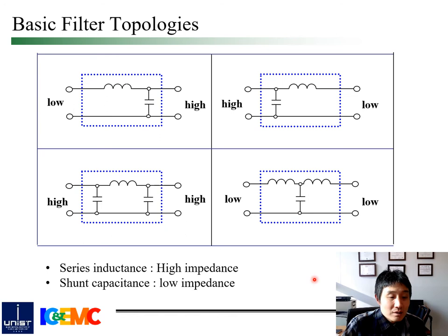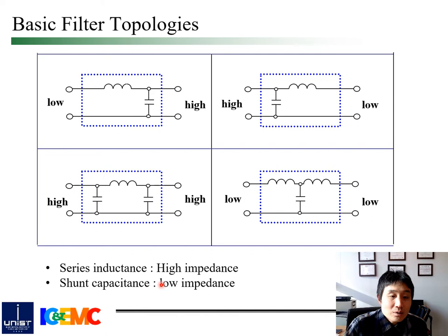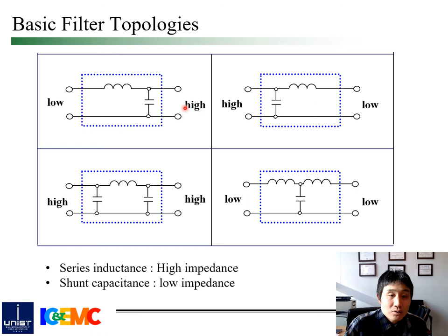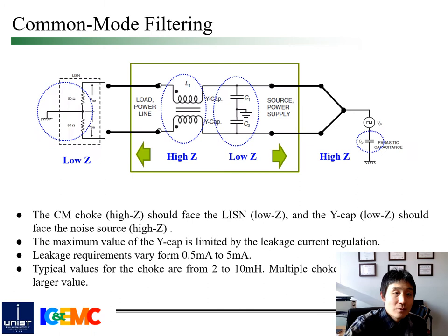We can find some basic filter topologies. In filter design, inductance is used for series high impedance, whereas capacitance is used for shunt low impedance. To maximize the impedance mismatch between noise source and receiver, the configuration of a filter should be determined depending on the impedance condition of source and receiver. That is, a shunt capacitance should be located at the interface to high impedance, but a series inductance should be located at the interface to low impedance.